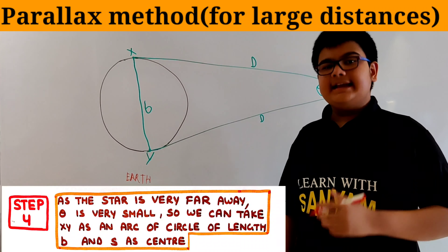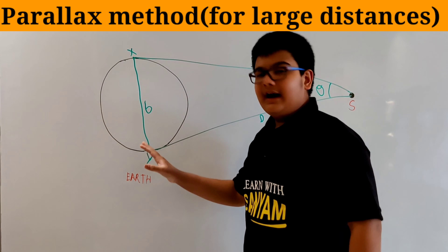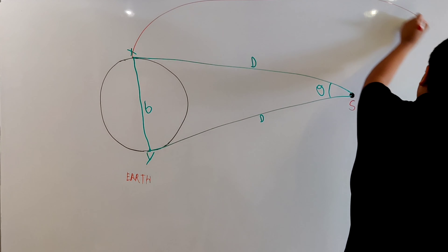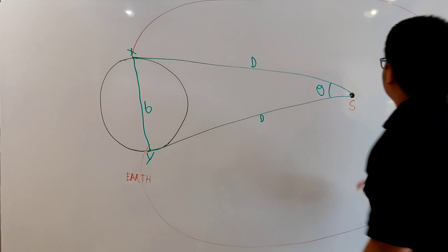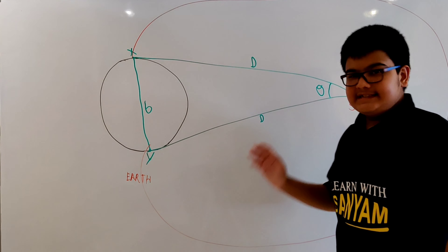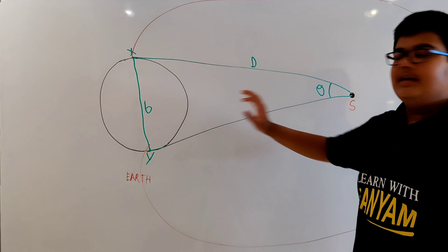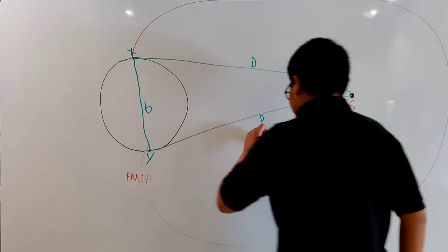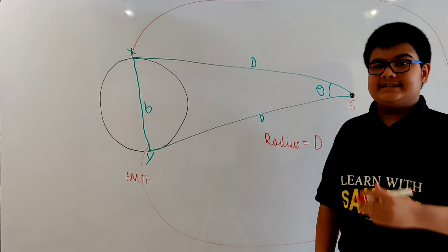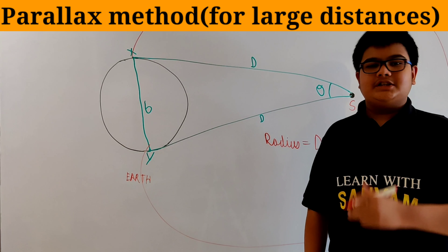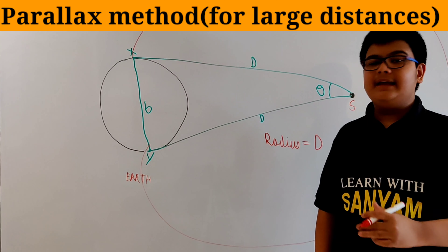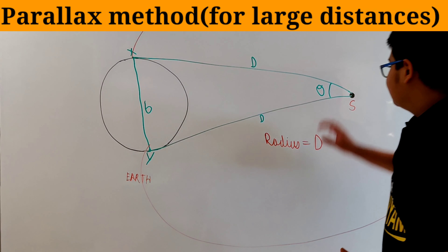Since the star is very far away from the earth, theta will be very small. So we can treat XY as an arc of a circle of length B, with S as the center. We consider a very large circle in which XY is an arc and S is the center. In this circle, XY is the arc, S is the center, and D is the radius.